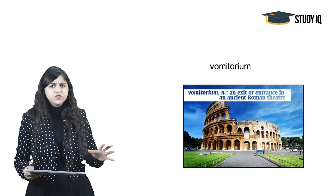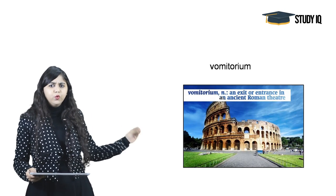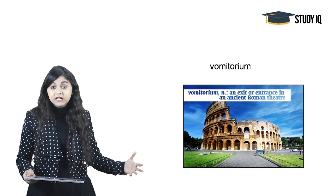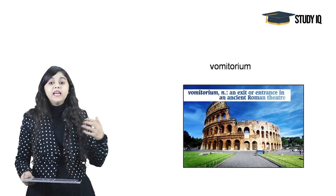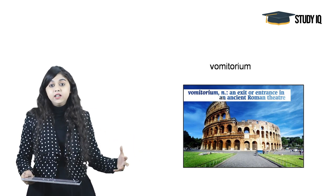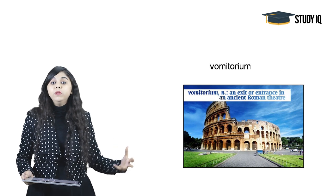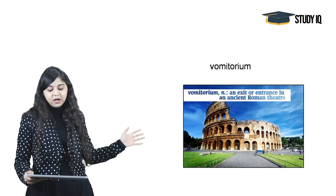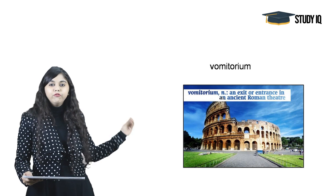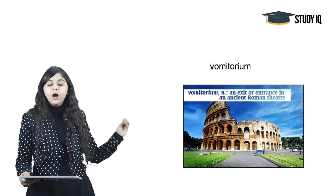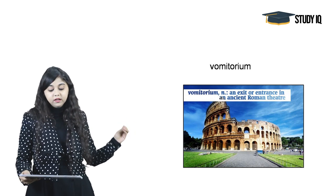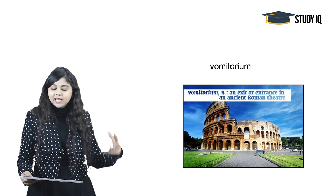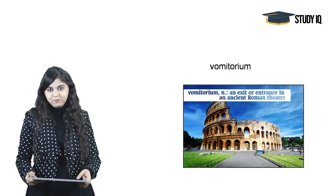Starting with the first word: Vomitorium. We have previously seen this word. It is the entry and exit gate of a Roman theatre. Vomitorium (noun) was the exit or entrance in the ancient Roman theatre.